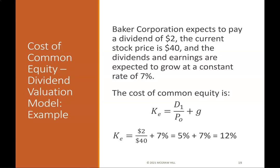Cost of common equity — dividend valuation model example: Baker Corporation expects to pay a dividend of $2, the current stock price is $40, and dividends and earnings are expected to grow at a constant rate of 7%. The cost of common equity is D / P + G = 12%.